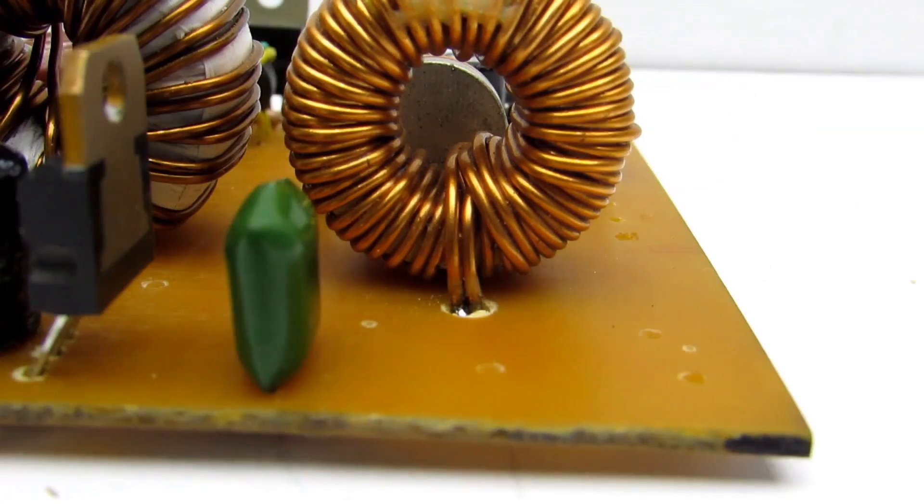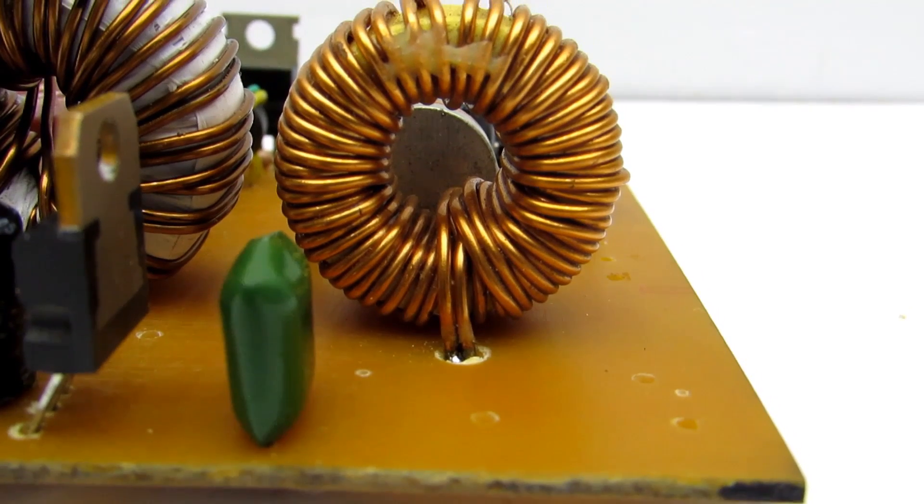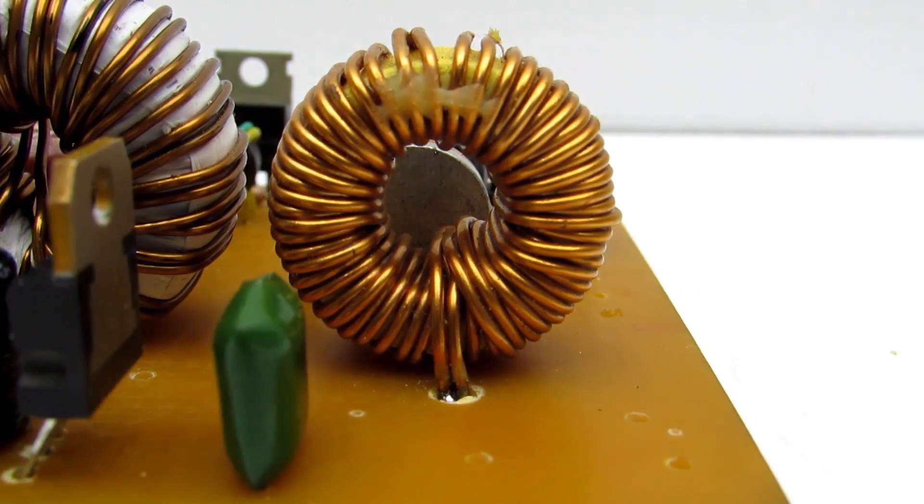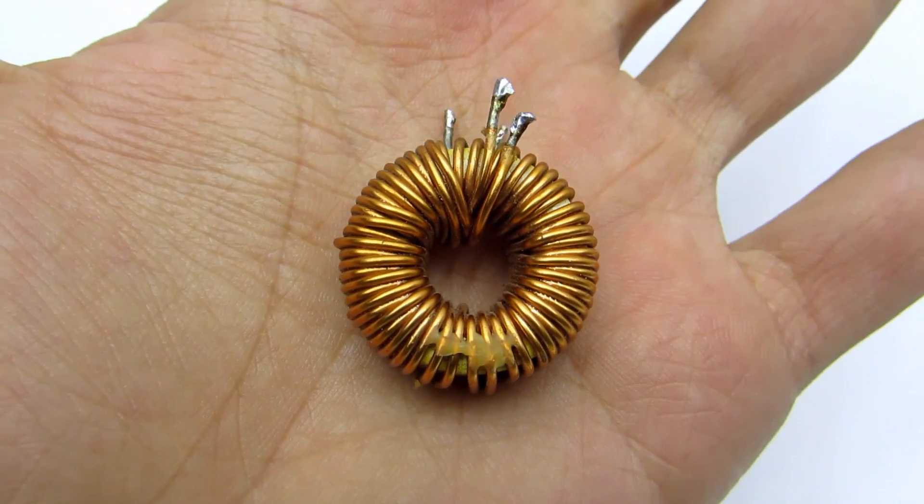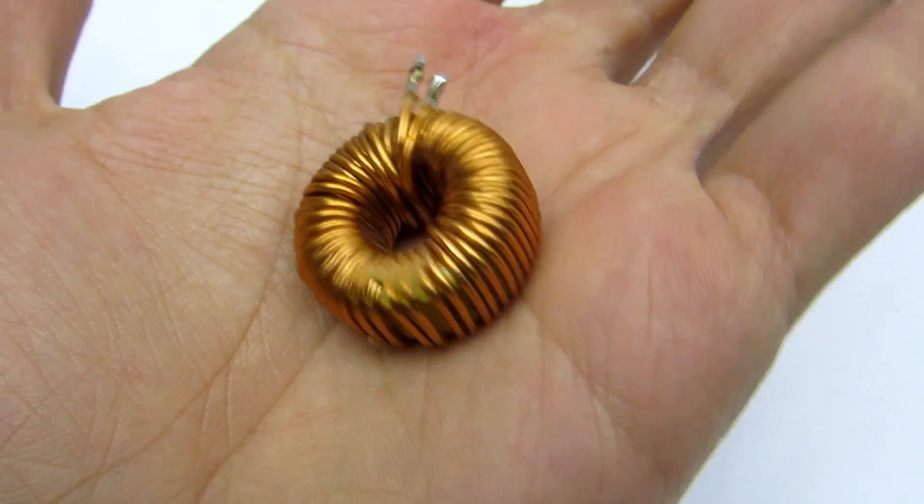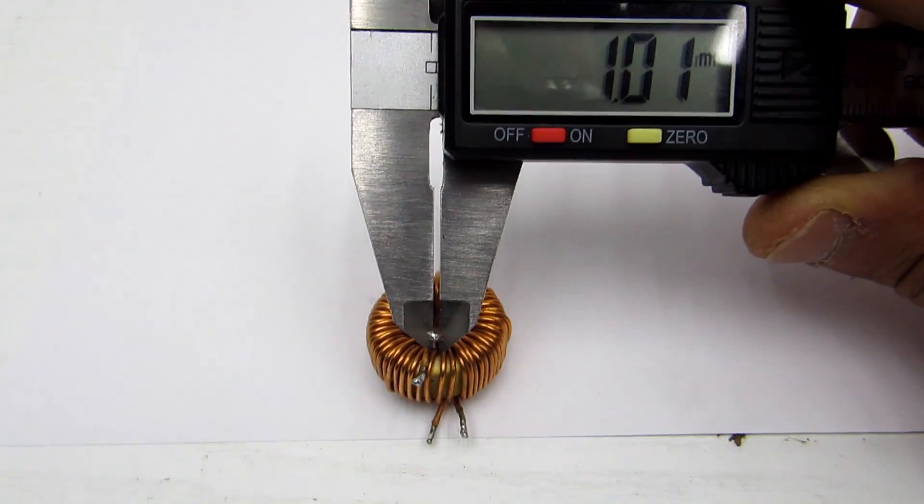The choke core is taken from the computer power supply, where it was choke of the group stabilization. Winding consists of 30 turns. Wound with double wire, diameter is 1 mm each.